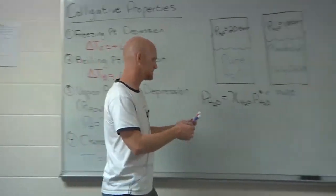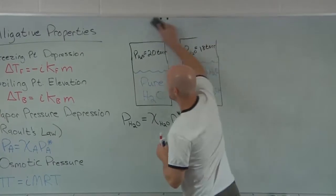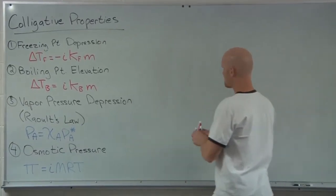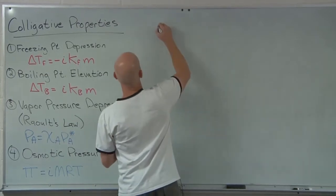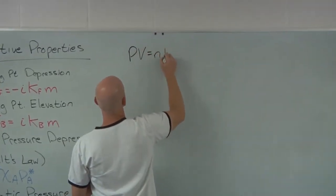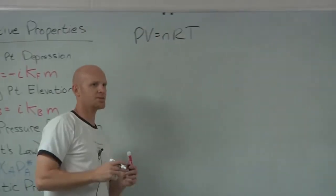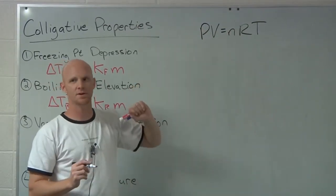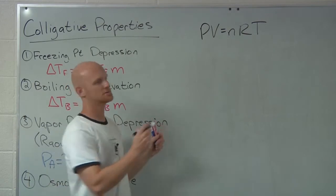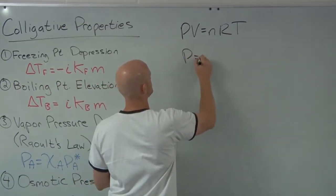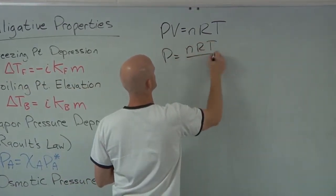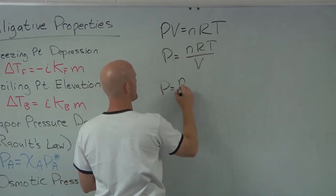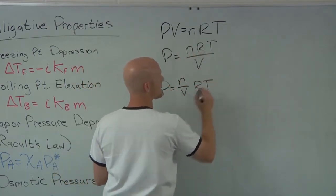All right, so osmotic pressure. In fact, let's get a little more room here. If you look at PV equals NRT, can somebody solve for P and tell me what it equals? What's P equal? NRT over V. NRT over V. If we rearrange this just a little bit, we can say it's equal to N over V times RT. Same diff.